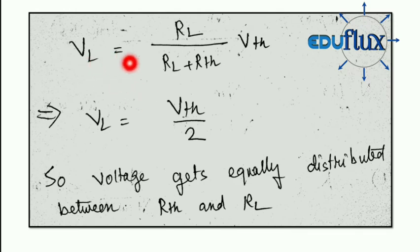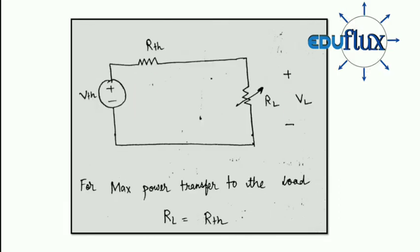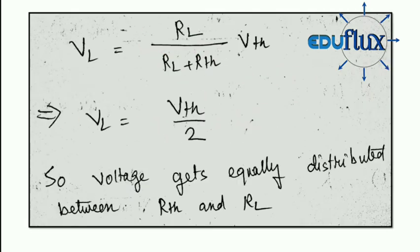Here VL is equal to, now let's find out VL. We will be applying voltage divider rule: RL divided by RTH plus RL into VTH. So VL is equal to RL by RL plus RTH, that is VTH by 2 because RL and RTH are same. So this will be 2 RL and VTH by 2. So voltage gets equally distributed between RTH and RL.